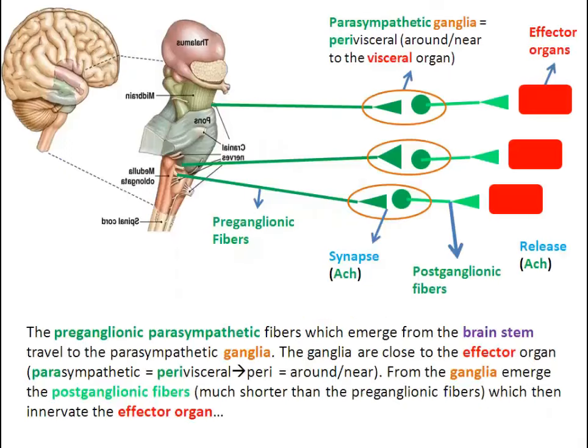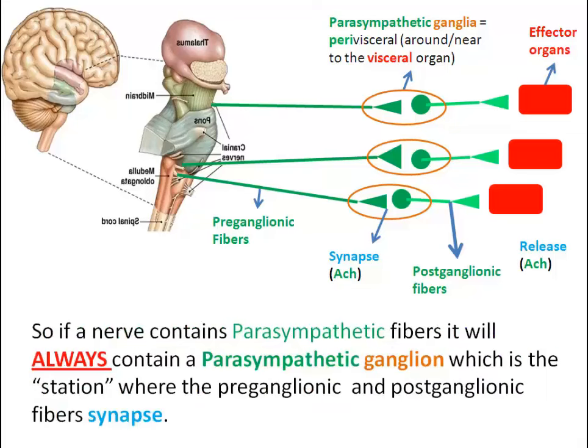The preganglionic parasympathetic fibers, which emerge from the brainstem, travel to the parasympathetic ganglia. The ganglia are close to the effector organ — parasympathetic equals perivisceral; peri meaning around or near the organ. From the ganglia emerge the postganglionic fibers, much shorter than the preganglionic fibers, which then innervate the effector organ. So if a nerve contains parasympathetic fibers, it will always contain a parasympathetic ganglion, which is the station where the preganglionic and postganglionic fibers synapse.